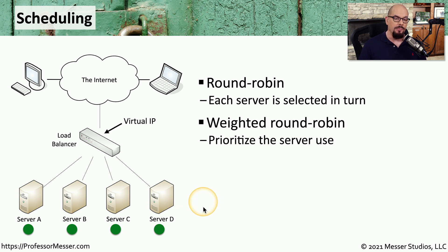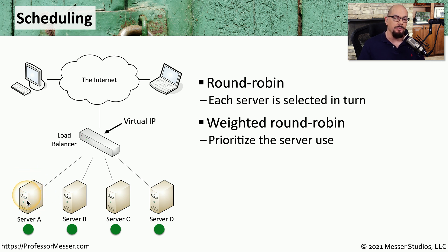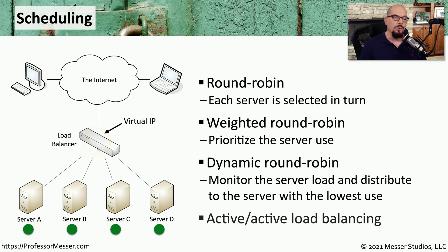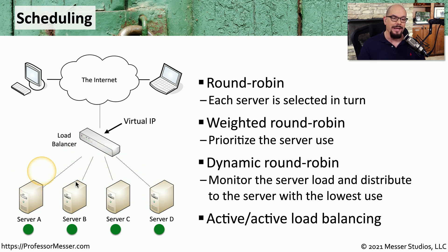There are also variants to this round robin process. A weighted round robin might prioritize one server over another — for example, one server might receive half of the available load while the other servers make up the rest. With dynamic round robin, the load balancer tracks the load occurring across all servers and sends each new request to the server with the lightest load. This is a staple for active-active server load balancing, where all servers are active simultaneously, and if one fails, all the other servers pick up the load and continue operating without anyone on the outside knowing there's a problem.